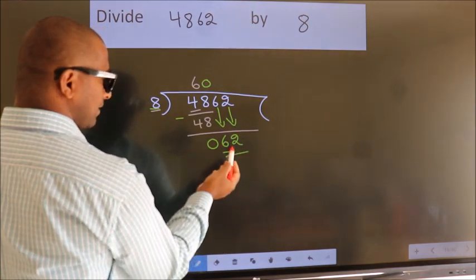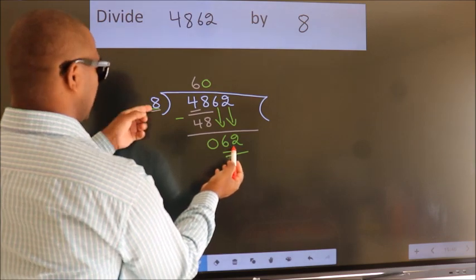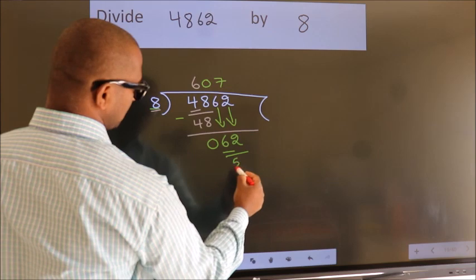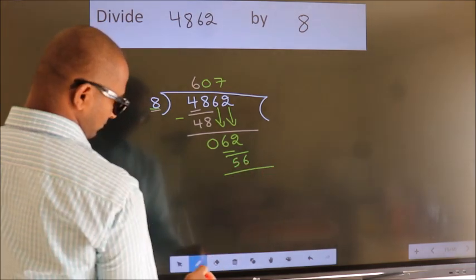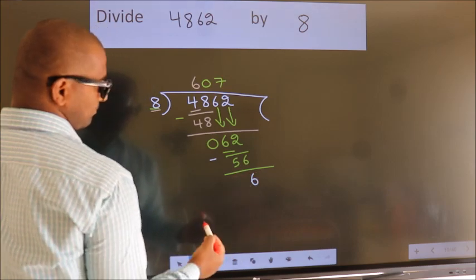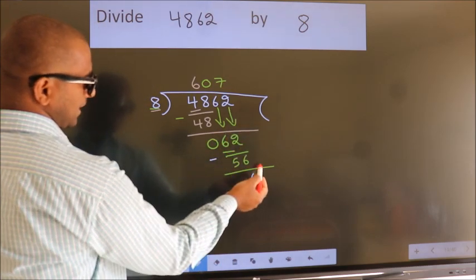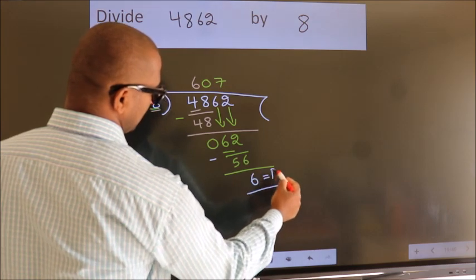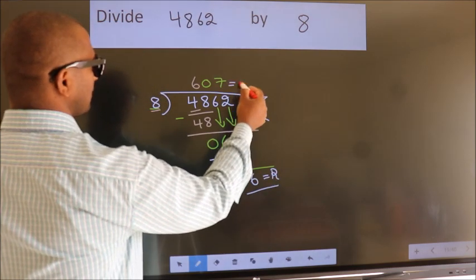So 62. A number close to 62 in 8 table is 8 times 7, which is 56. Now we subtract. We get 6. No more numbers to bring it down, so we stop here. This is our remainder. This is our quotient.